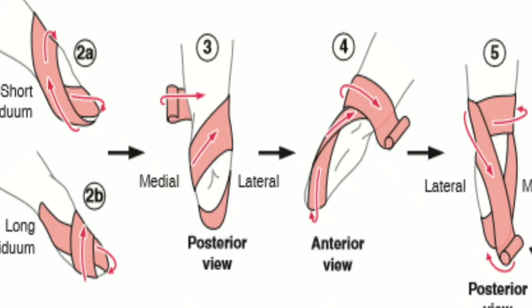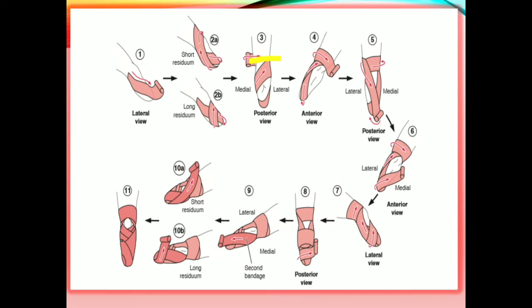After the second turn, we make a turn on the posterior aspect from medial to lateral, then we make an anchoring turn over the distal thigh but we spare the patella. You can see that in diagrams three, four, and five. In diagram three, this is the anchoring turn over the distal thigh — just above the knee joint — and in diagrams four and five it is also visible. Only one anchoring turn is made above the knee joint.